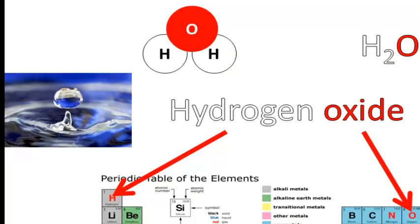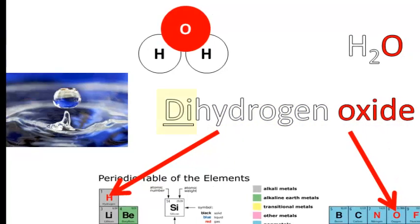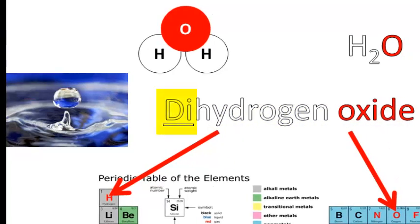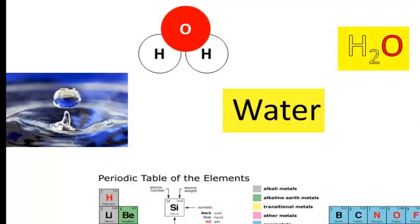This is a very special kind of oxide. We could call it hydrogen oxide or dihydrogen oxide because there are two H's bonded to one O, H2O. But in fact we just call it by its common name, water. Water's formula, H2O.